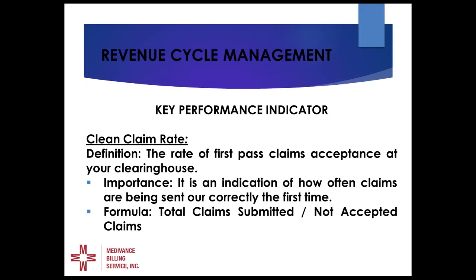The filters should identify if an ID number or date of birth is incorrect by correlating against portals in the various care systems — for example, knowing that Jane Doe's date of birth is January 1, 1955 and not January 15, 1955. Those are the kinds of things you want to monitor, and you can track it all using the clean claim rate metric.